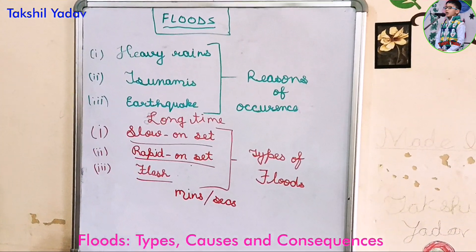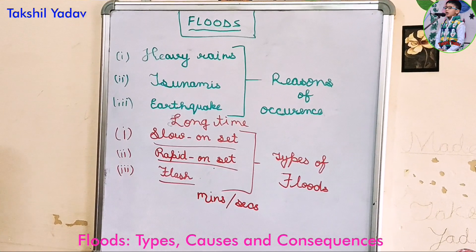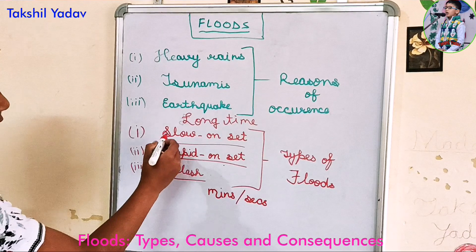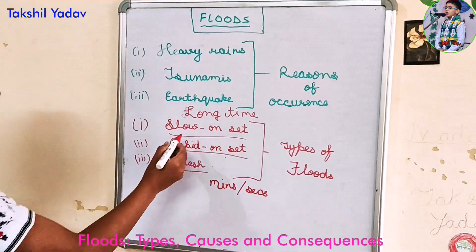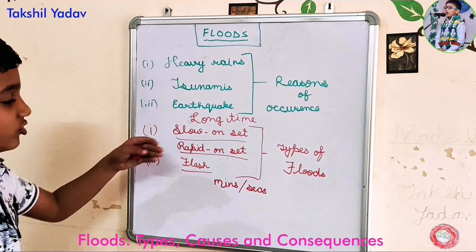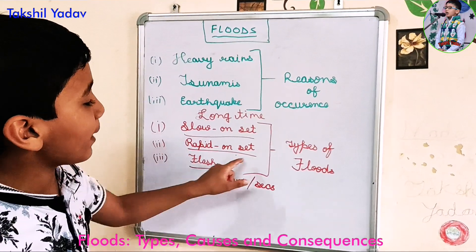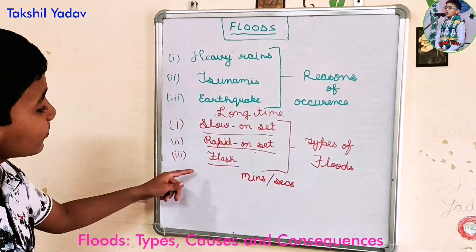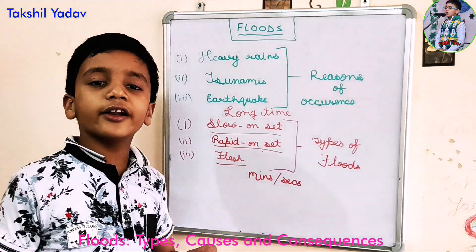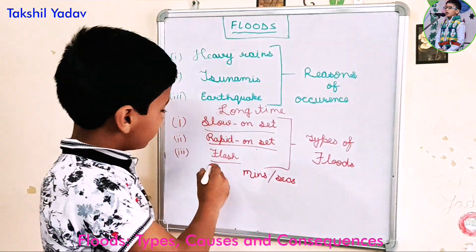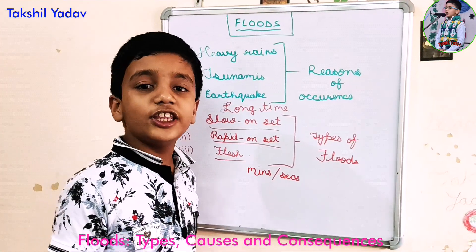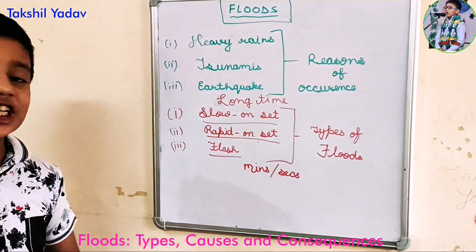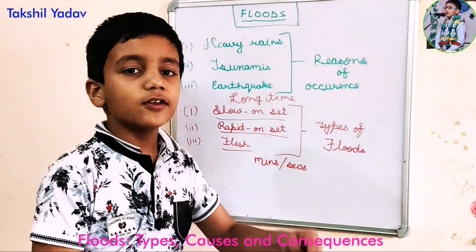You might have noticed that the floods are named according to their time. Slow onset floods are named slow because they take a long time. Rapid onset floods are named rapid as they take less time. And flash floods are given the name flash as they take the least time to occur — just like a flash of lightning.